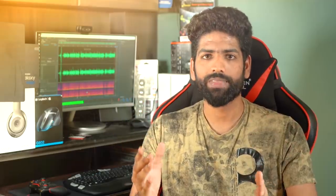Dynamic range is the difference between the lightest tones and the darkest tones of an image. Let's say a scene has a range of tones — the shadows are as dark as this and the highlights are as bright as this. A camera may not be able to capture everything perfectly.